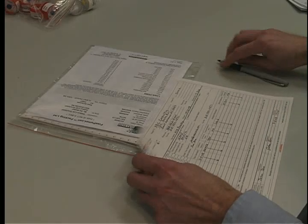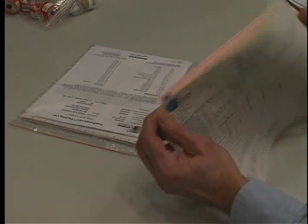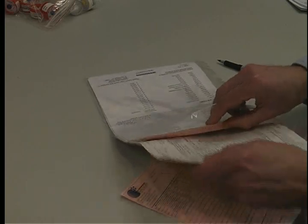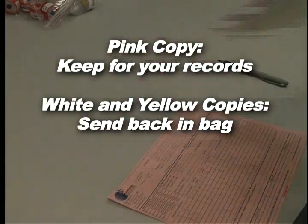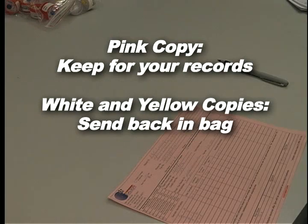Then complete the chain of custody form. It is important that you include all the information requested in order to ensure the turnaround time of your samples. Remove the pink copy and keep this for your records. Send the white and yellow copies in with the samples to the lab in the large Ziploc bag.